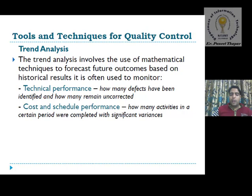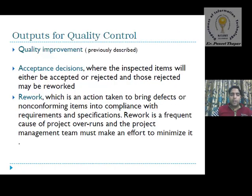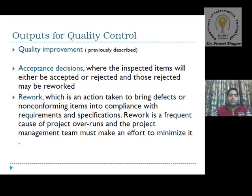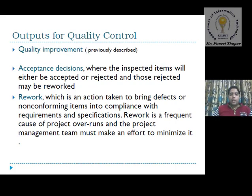Technical performance measures include how many defects may be identified and how many remain uncorrected. Cost and schedule performance is calculated — for example, how many activities in a certain period were completed with significant variances. These are all the tools, and last we will discuss the output for quality control.